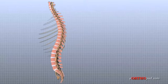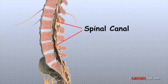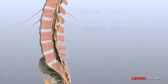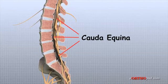The spinal cord extends from the brain to the L2 vertebra. Below this level, the spinal cord splits into a bundle of nerves that goes to the lower limbs and pelvic organs. The Latin term for this bundle of nerves is cauda equina, meaning horse's tail.